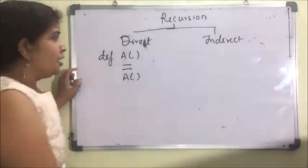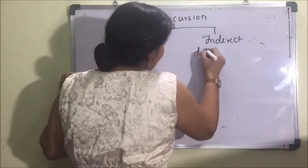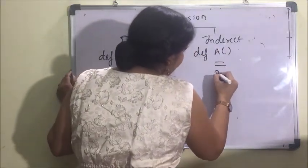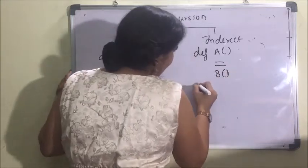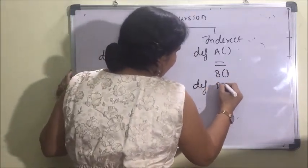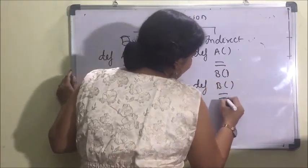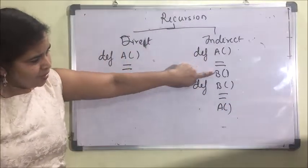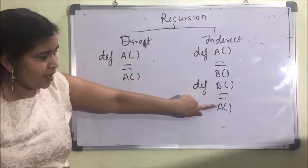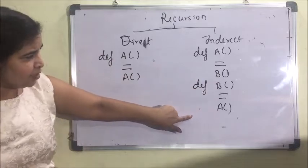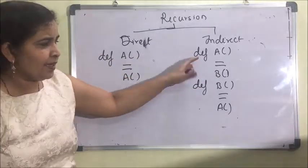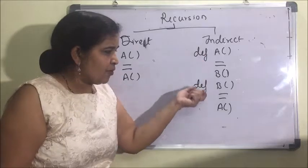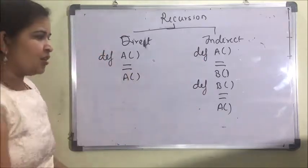If in function a I call b, and in b I call a — when a executes it calls b, which in turn calls a, meaning they will keep on calling each other. This type is known as indirect recursion.